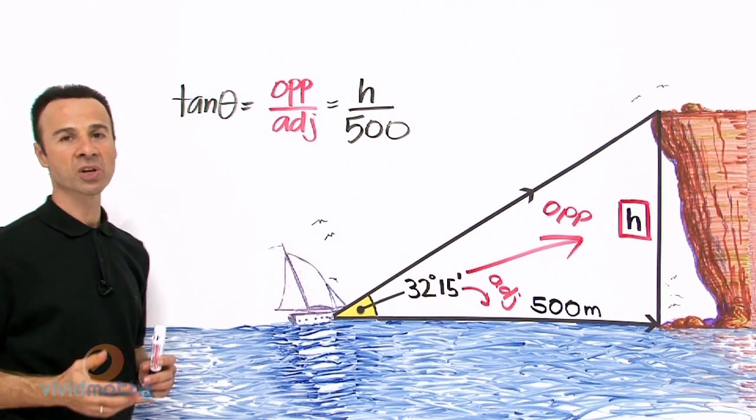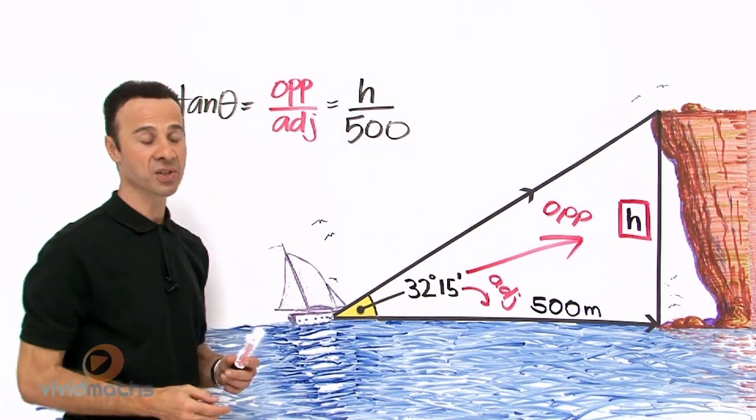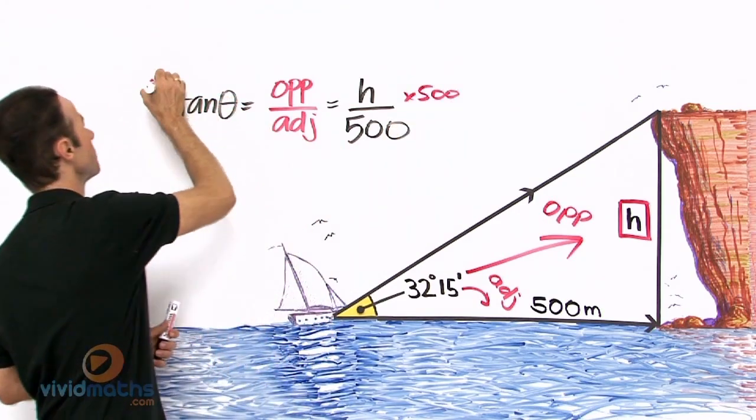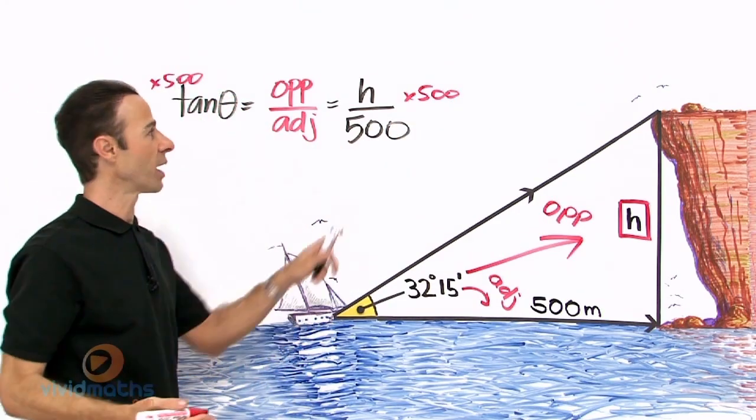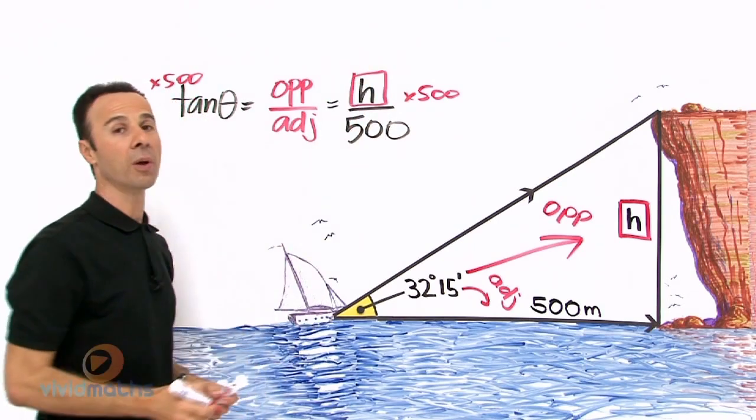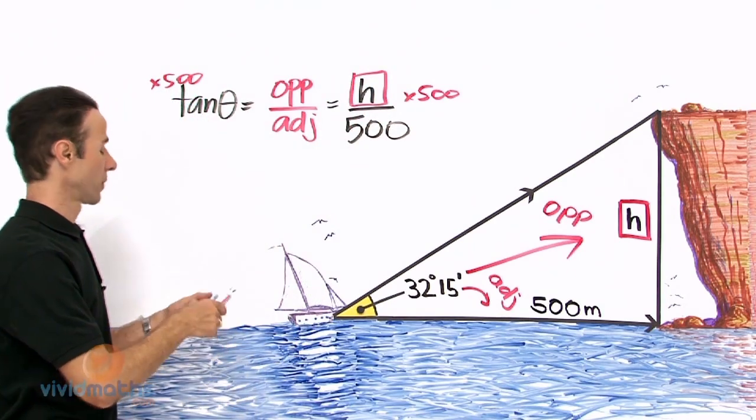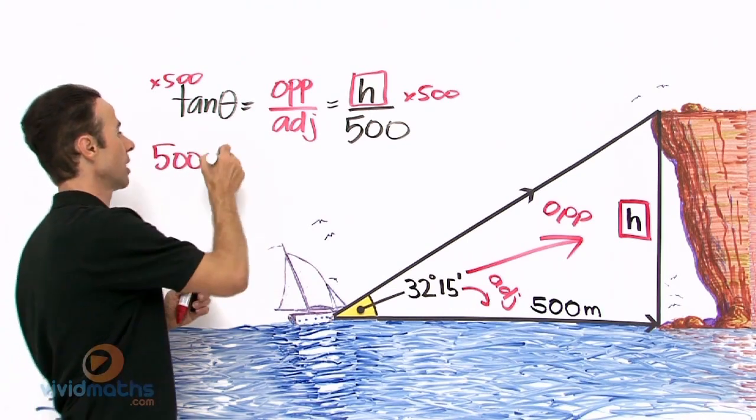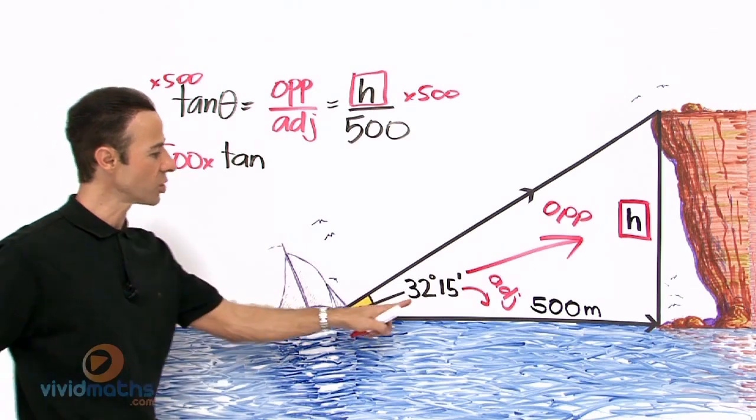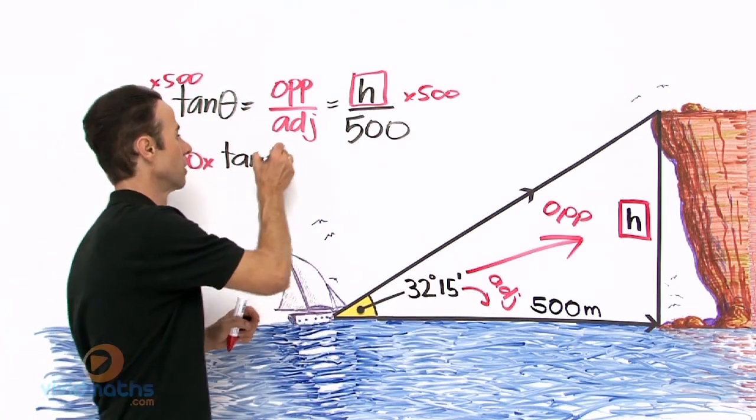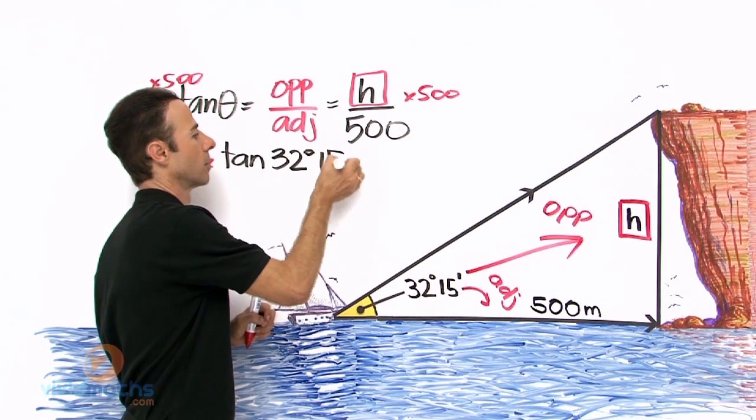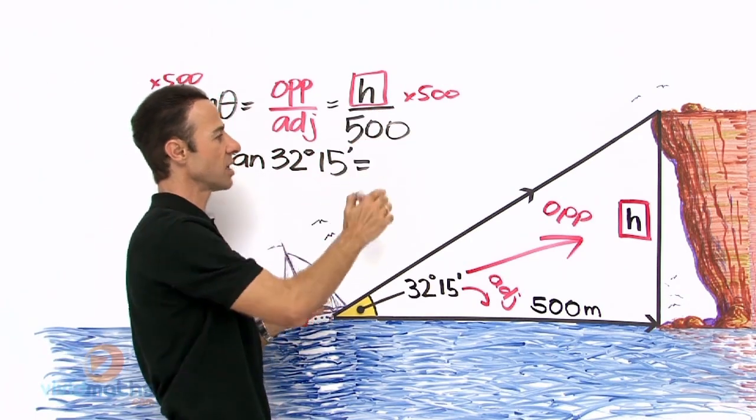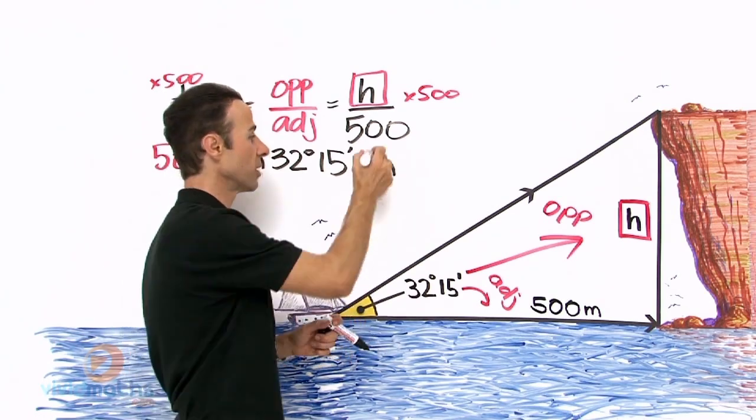Okay, now what we need to do is multiply both sides by 500 so we are left with h by itself. So I am going to multiply by 500 times, multiply by 500 times, multiply by 500 times. Why? Because we are looking for h. We want that h all by itself. So it is going to be 500 times tan. Now what is tan again? It is 32 degrees 15 minutes. And that is going to equal, as you can see, that is the h there. Let us bring the h there. H, which is the height of the cliff.